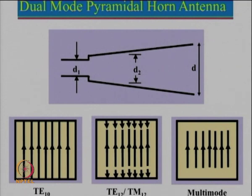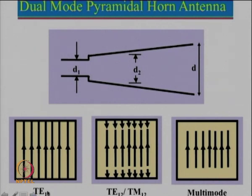A lot of research has been done and many papers exist where people try to reduce this shoulder. We will start with one technique known as the dual mode pyramidal horn antenna. For the pyramidal horn antenna we operate it in the TE10 mode, for which the field distribution is maximum at the centre and becomes zero at the edges.